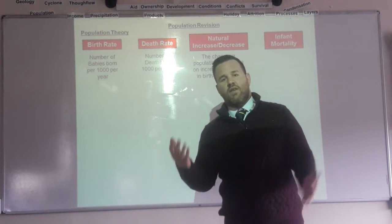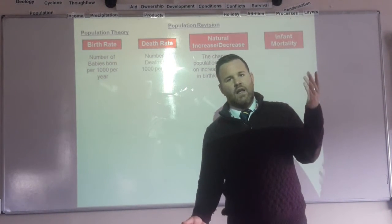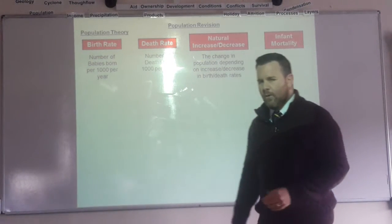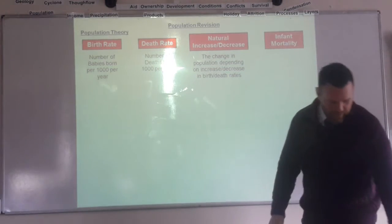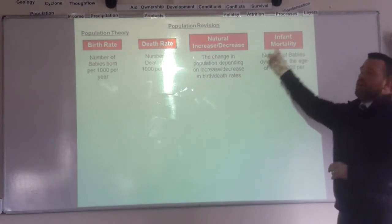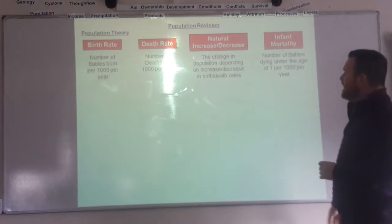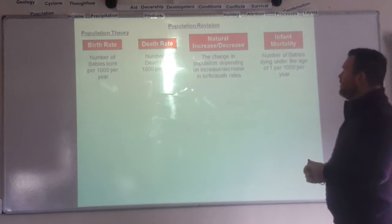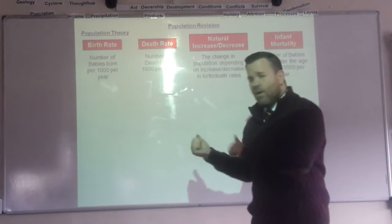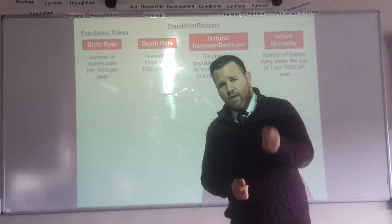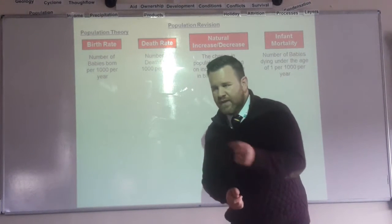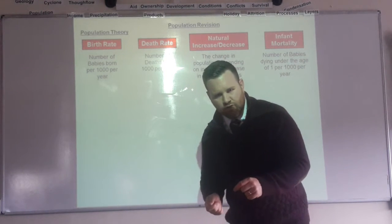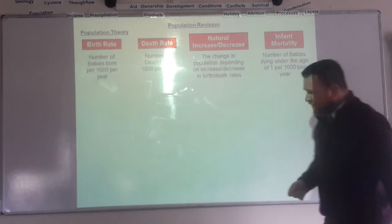If birth rates are higher than death rates, then the population will go up — more people being born than dying. If the death rate is higher than the birth rate, the population will go down because more people are dying than are being born. You've also got infant mortality, which is very important when looking at LEDCs and why you get high birth rates there. Infant mortality is the number of babies dying under the age of 1 per 1,000 per year. Fertility rate is the number of babies born per woman — a figure like 1.3, 5.7, or 9.8 in some African countries.